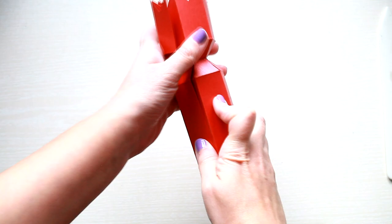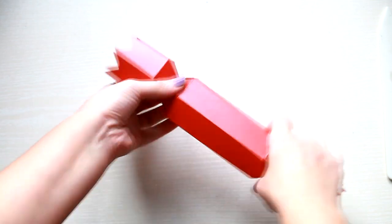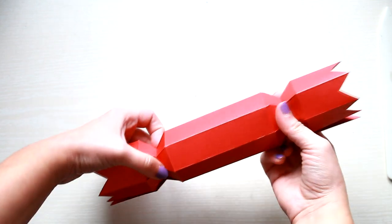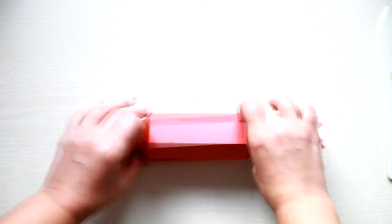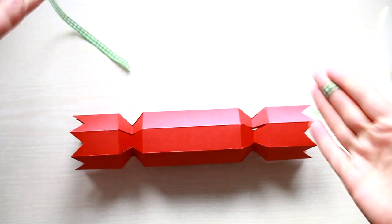To close the box, you need to overlap the first and the last sections of the box. You can either leave them that way or add a bit of double sided tape to glue them into place.